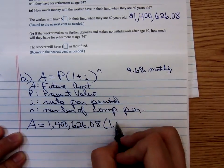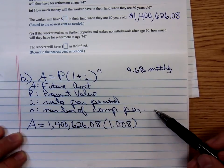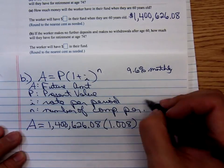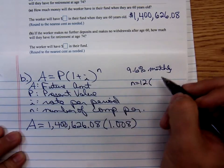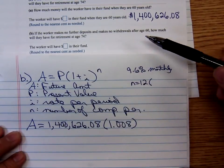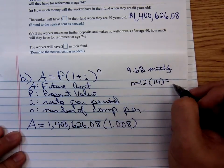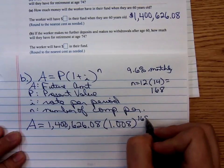So the i value is still 0.008. How many compound periods are there? They're adding interest 12 times a year. This person's working till they're 74, so that's for 14 more years. 12 times 14 is 168, so my exponent is 168.